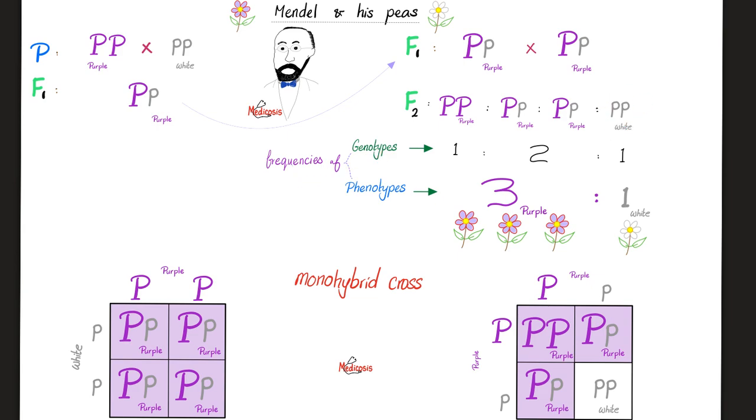So, what's the frequency of the genotypes? Well, here is one, two, to one. Oh, 25%, two, 50%, two, 25%. How about the frequency of the phenotypes?